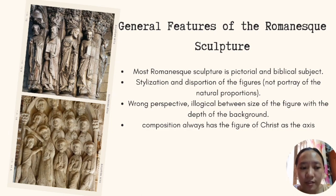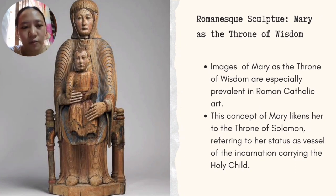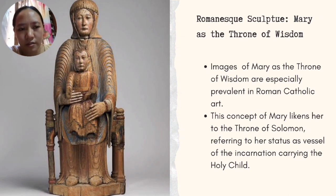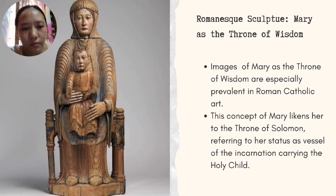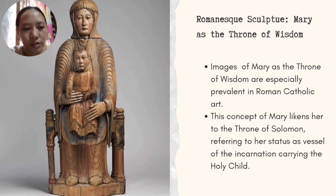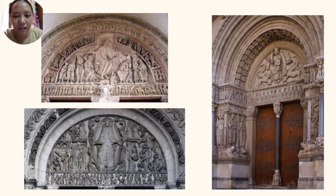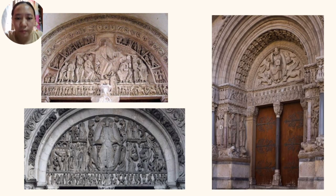The composition of Romanesque sculpture always has the figure of Christ as the axis. Images of Mary as the throne of wisdom are especially prevalent throughout Roman Catholic art — a popular biblical theme represented throughout Romanesque sculpture, associating the Blessed Virgin with glory and teachings. Madonnas in these traditions are especially popular in Catholic imagery. The façades were sometimes also decorated with sculpture, and this decoration was very important in the tympanum of the main entrance.